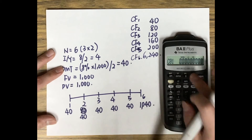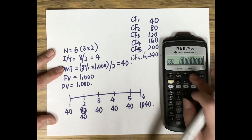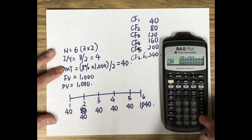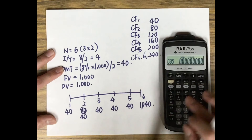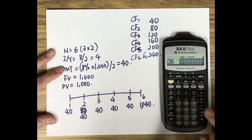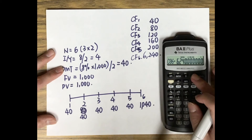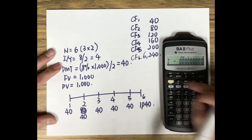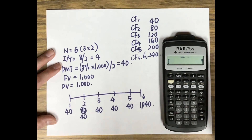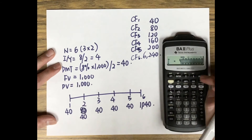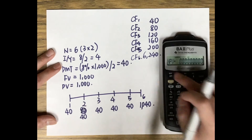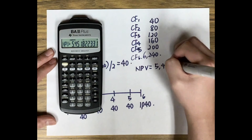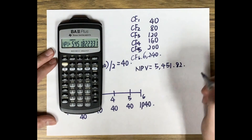Enter the cash flows: CF1 = 40, CF2 = 80, CF3 = 120, CF4 = 160, CF5 = 200, CF6 = 6,240. Press Enter and Down. Then press the NPV button and enter 4% as the discount rate, since this is a semi-annual coupon bond. Press Down and Compute. The NPV is $5,451.82.